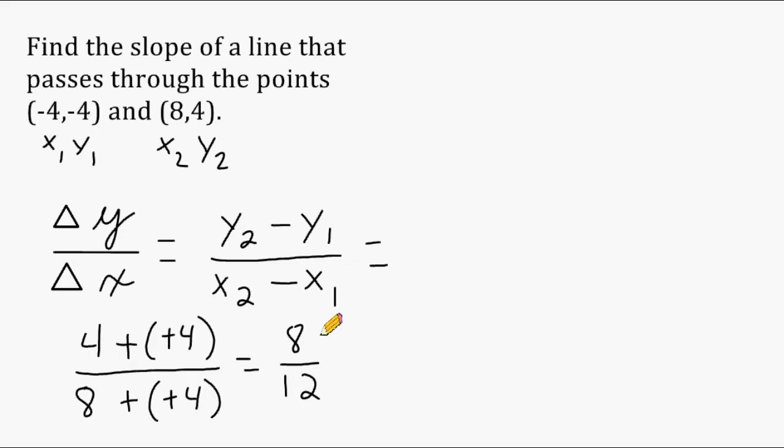And then you got to ask yourself, can you reduce what you have right here? And we have a change of y of 8 as compared to a change of 12 for the x's. And because 4 is a common factor of 8 and 12, we can reduce by a factor of 4. So 8 divided by 4 is 2 and 12 divided by 4 is 3.